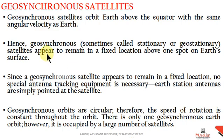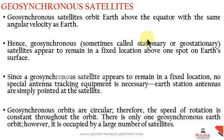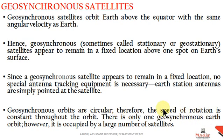In this video I would like to discuss some of the features of geosynchronous satellites. Geosynchronous satellites are satellites orbiting around the earth above the equatorial orbit with the same angular velocity as that of earth. They are also known as stationary or geostationary satellites because they remain at a fixed position above one spot on earth's surface. Since a geosynchronous satellite appears to remain in a fixed location, it does not require any special antenna tracking equipment — that is one of the major advantages. Another feature is that geosynchronous orbits are circular, and hence the speed of rotation is constant throughout the orbit.